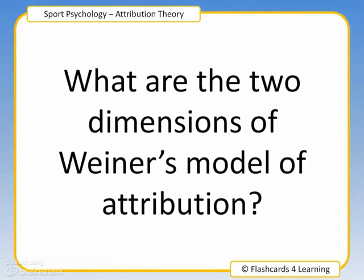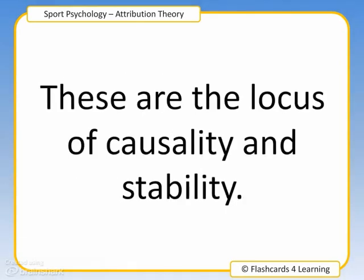What are the two dimensions of Weiner's model of attribution? These are the locus of causality and stability.